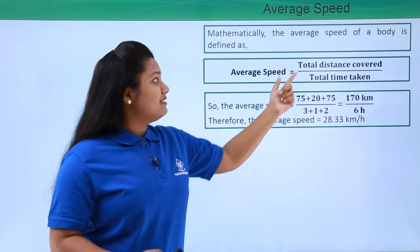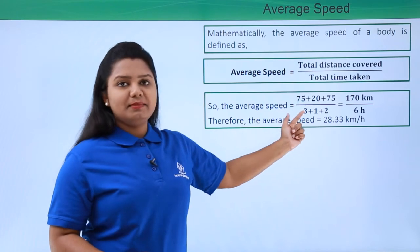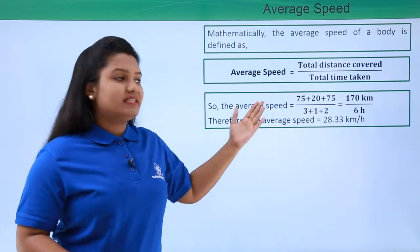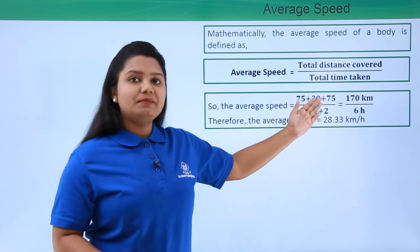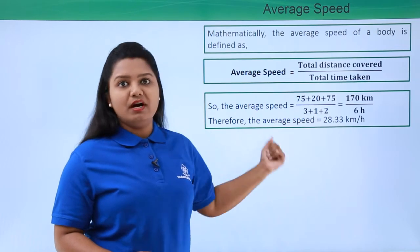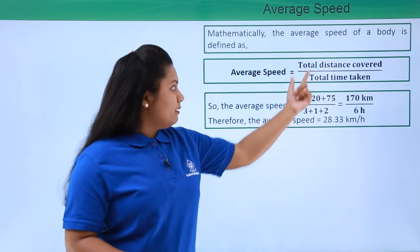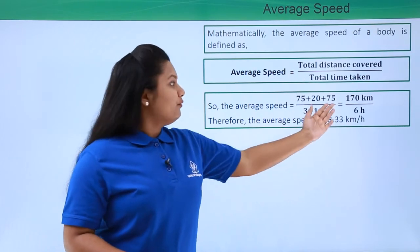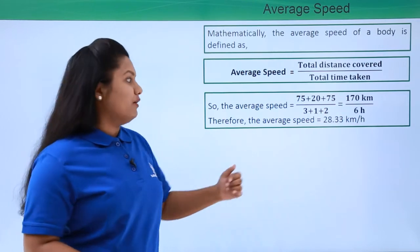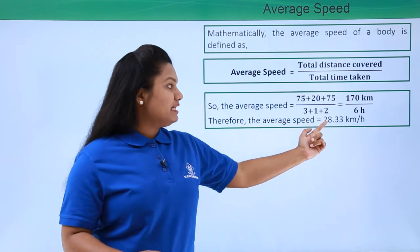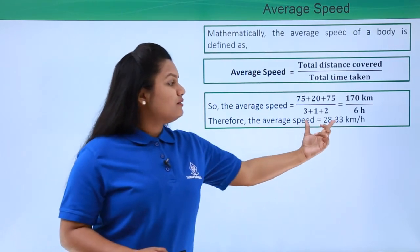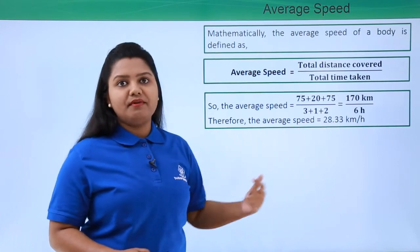The average speed, as I said, is the total distance divided by the total time. So the total distance that the car has traveled was 75 kilometers plus 20 plus 75, with the time 3 hours, 1 hour, and 2 hours respectively. Now let's apply the formula here, which equals 170 kilometers by 6 hours, and this yields 28.33 kilometers per hour. Now this is the average speed that we have found out.